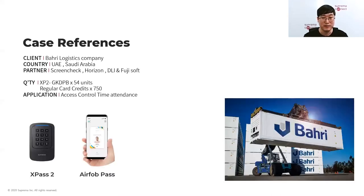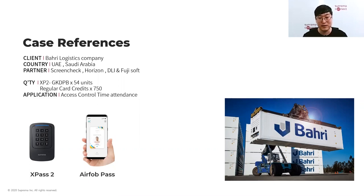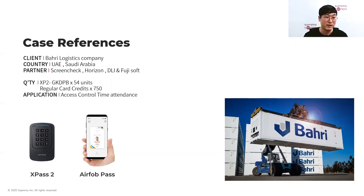Another Middle East case reference is Bahari Logistics, also a long-time Suprema customer using fingerprint readers. They wanted a touchless solution that could also prevent buddy punching. Since it was not a large project, we suggested XPass 2 with mobile access as a cost-effective option compared to biometric readers. They accepted, noting that mobile access also prevents buddy punching since people don't hand over their mobile phones. They decided to use 50 units of XPass 2 with 750 mobile access cards in their office.